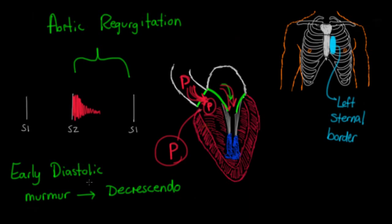To mention the right-sided equivalent: pulmonic regurgitation produces the same type of murmur — an early diastolic decrescendo murmur — but it would be heard along the upper left side of the sternum, whereas aortic regurgitation is heard generally along the left side of the sternum.